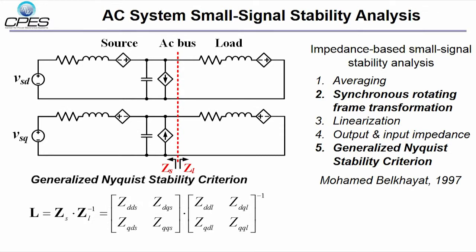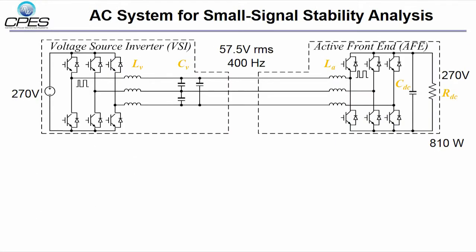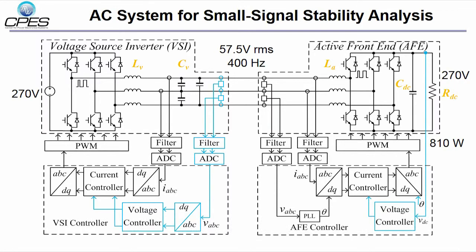This video will show you the first frequency domain experiment results for this method. Using voltage source inverter and active front-end converter, a 400 Hz AC system is created. Feedback control of both converters are designed and implemented. By changing the voltage loop control bandwidth, the system is made stable and unstable.